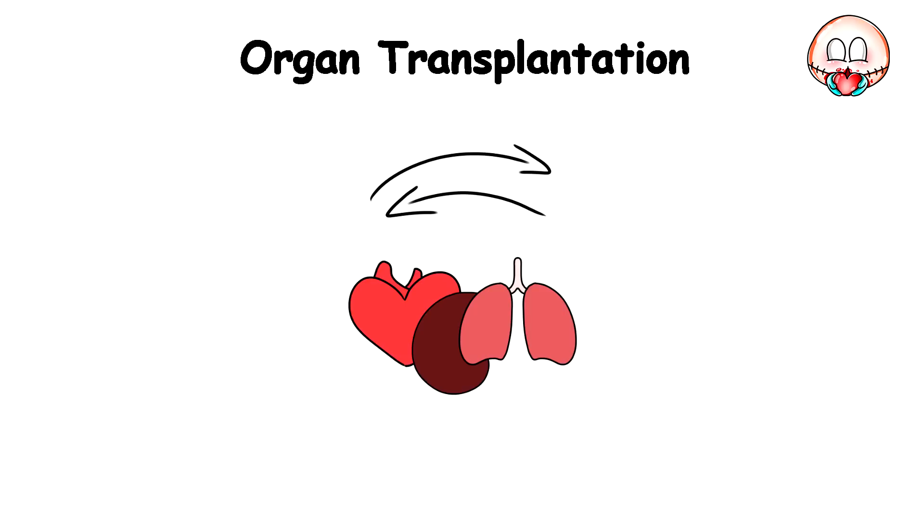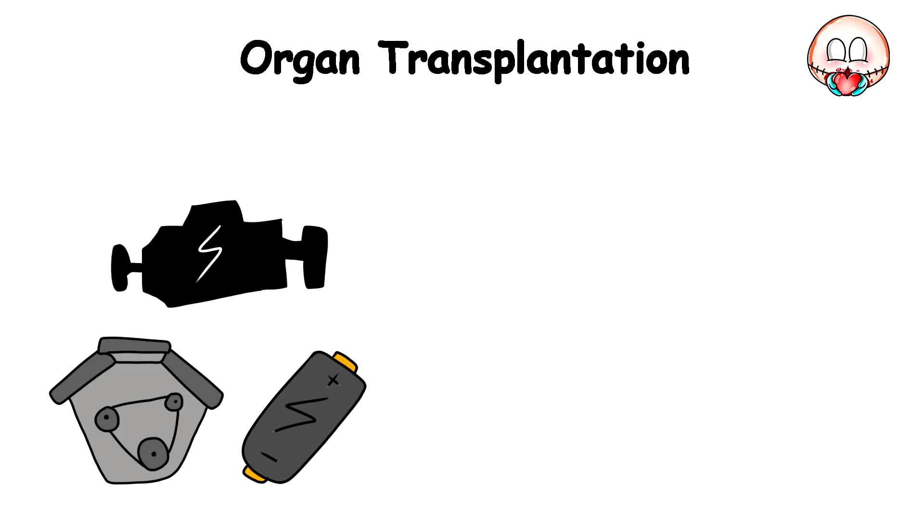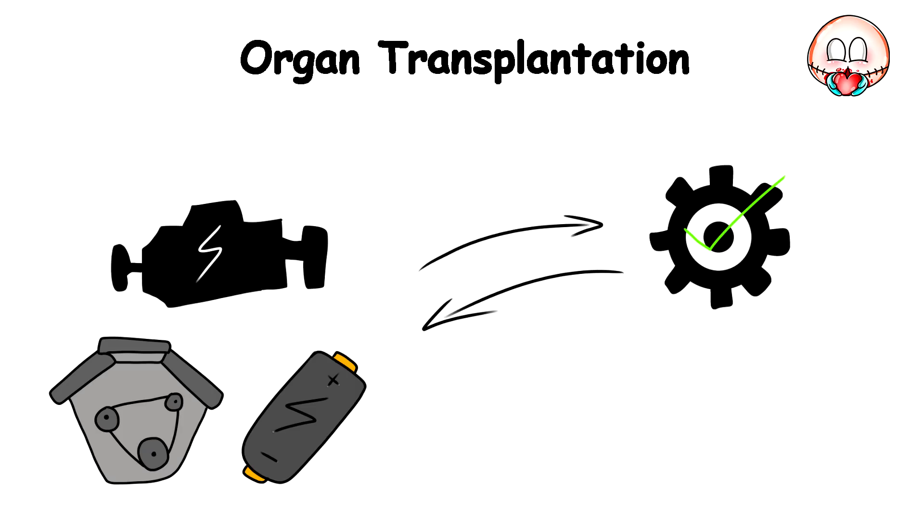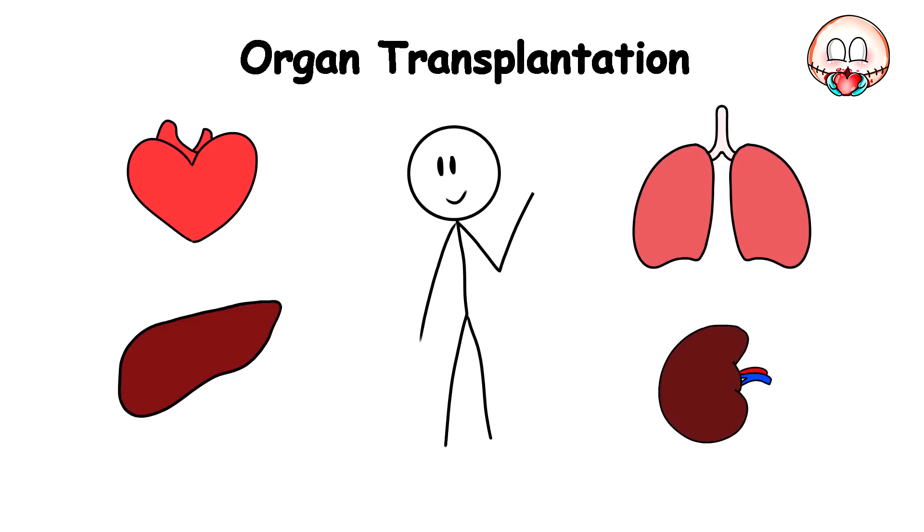An organ transplant is like being able to remove a faulty engine or battery from an essential machine and swap in a new working one to get it running correctly again. Except in this case, the machine is the human body, and the swapped components are the heart, liver, lungs, and more.